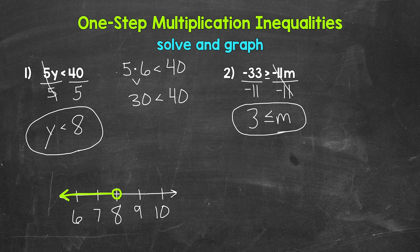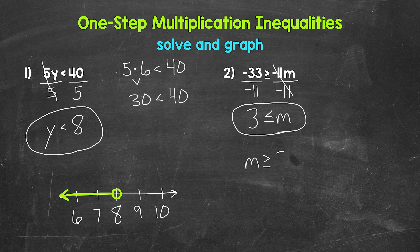For this video, we will focus on solving and graphing. Our answer is M is greater than or equal to three, so M can be anything greater than or equal to three. We can also rewrite this inequality with the variable coming first — all we need to do is write the variable first and make sure the symbol is going the correct way. So M is greater than or equal to three, with the symbol opening up towards M. Either way works.